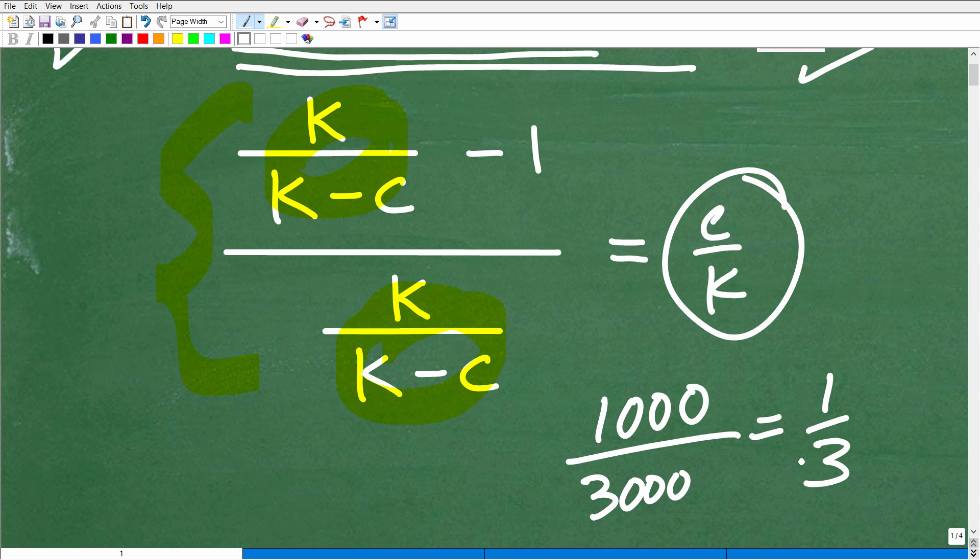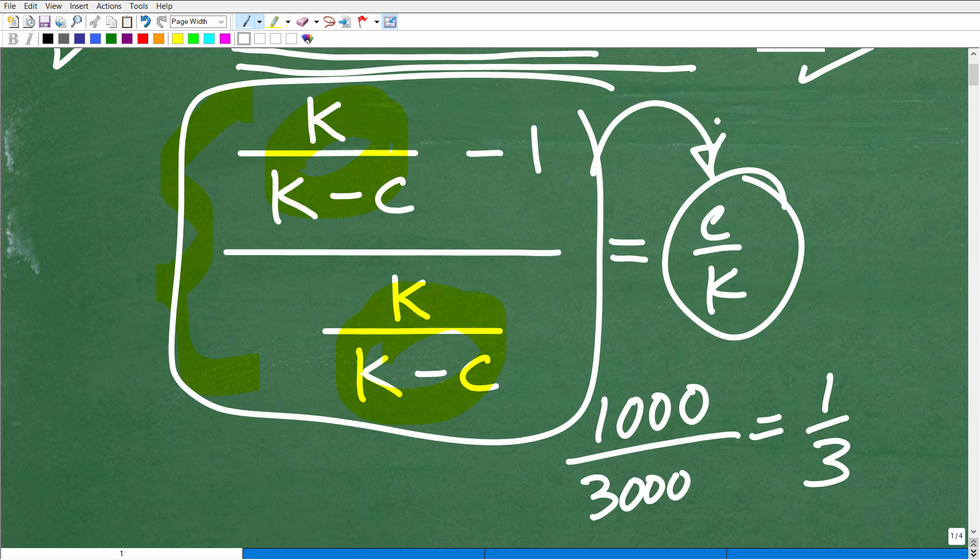Effectively, that is what you're doing in algebra. When you hear that direction, simplify this or simplify that, basically you're taking something like this and you're making it as simple as possible. In this case, the answer is c over k.